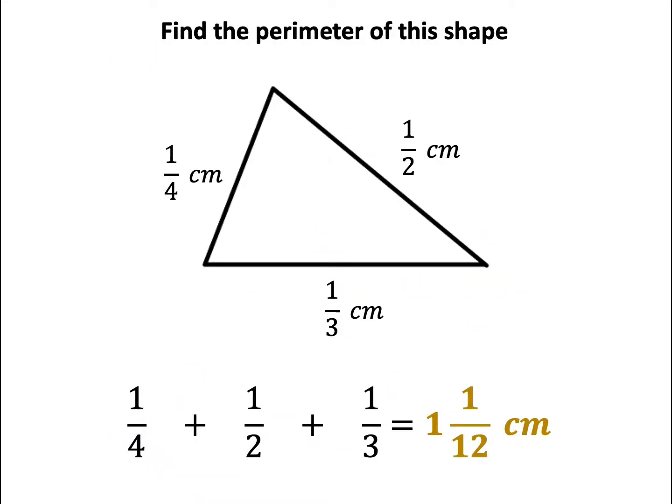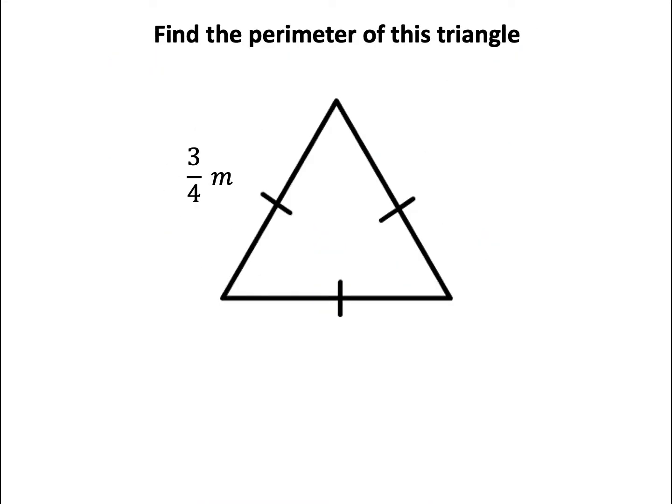Have a think about this question. We need to know the length of the missing two sides. To answer this question, we require a bit of knowledge about triangle properties. What type of triangle is this? This is an equilateral triangle. We know this as there are three dashes — all the lengths have a dash. This tells us that all three lengths on the equilateral triangle are the same.